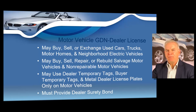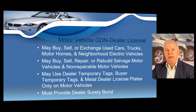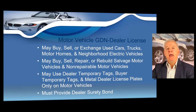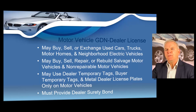A motor vehicle GDN allows you to buy, sell, or exchange used cars, trucks, motorhomes, and neighborhood electric vehicles. You may buy, sell, repair, or rebuild salvage motor vehicles and non-repairable motor vehicles. A motor vehicle GDN allows you to use dealer temporary tags, buyer temporary tags, and metal dealer license plates only on motor vehicles. We will cover dealer temporary tags, buyer temporary tags, and metal dealer license plates later in the course. This license does require you to provide a dealer surety bond, and allows you to sell vehicles retail to customers on the lot or wholesale directly to other dealers or through dealer auctions.